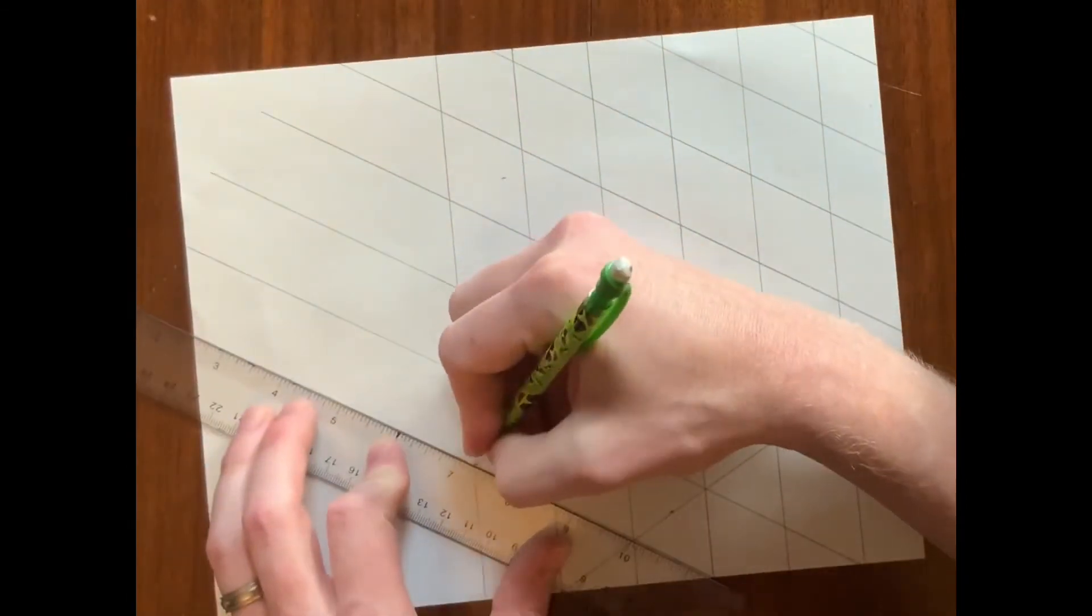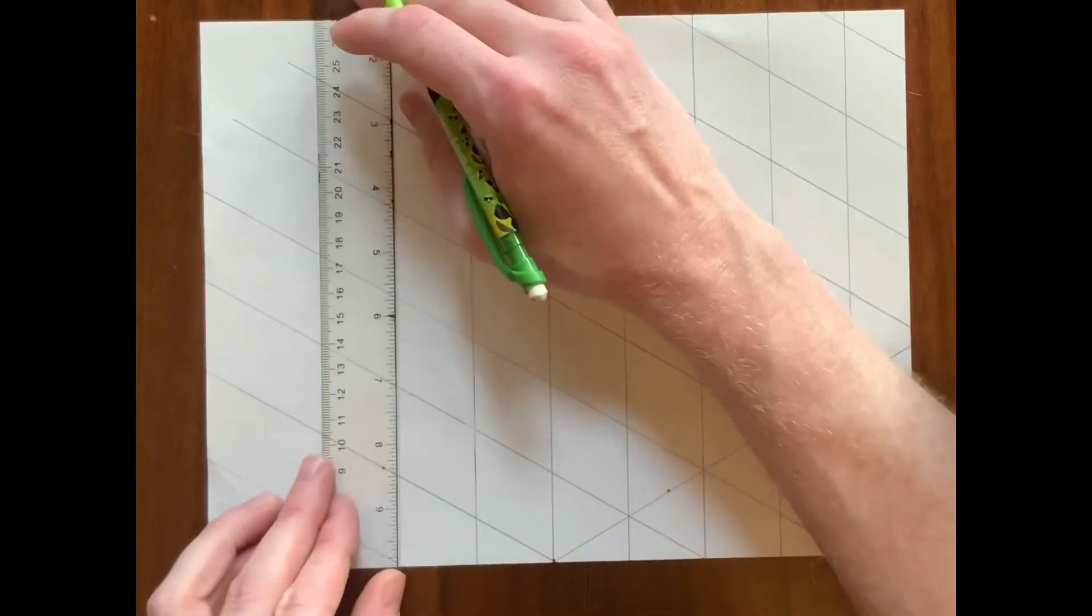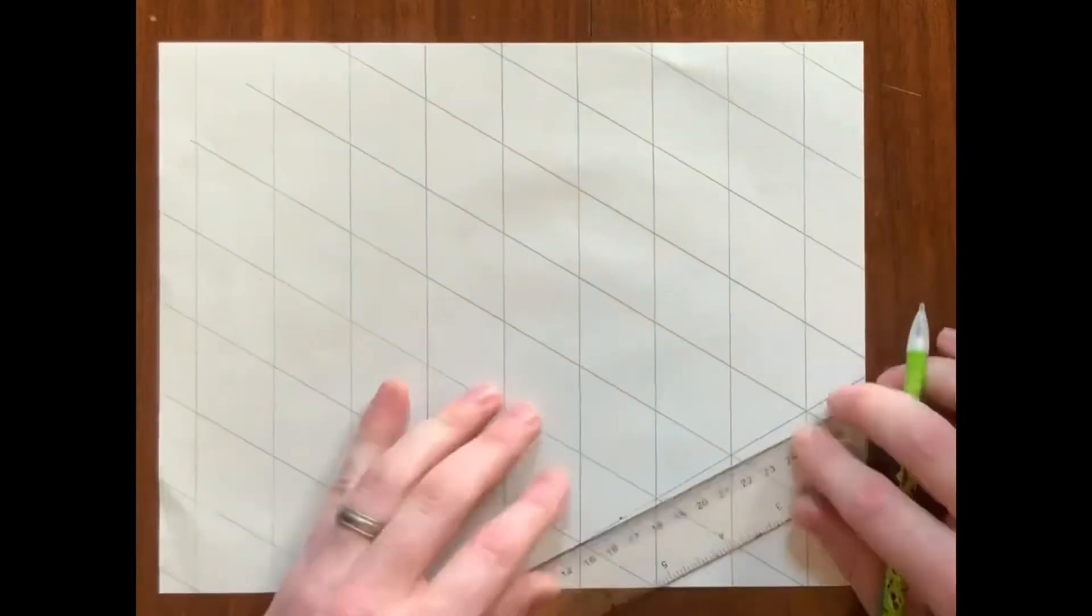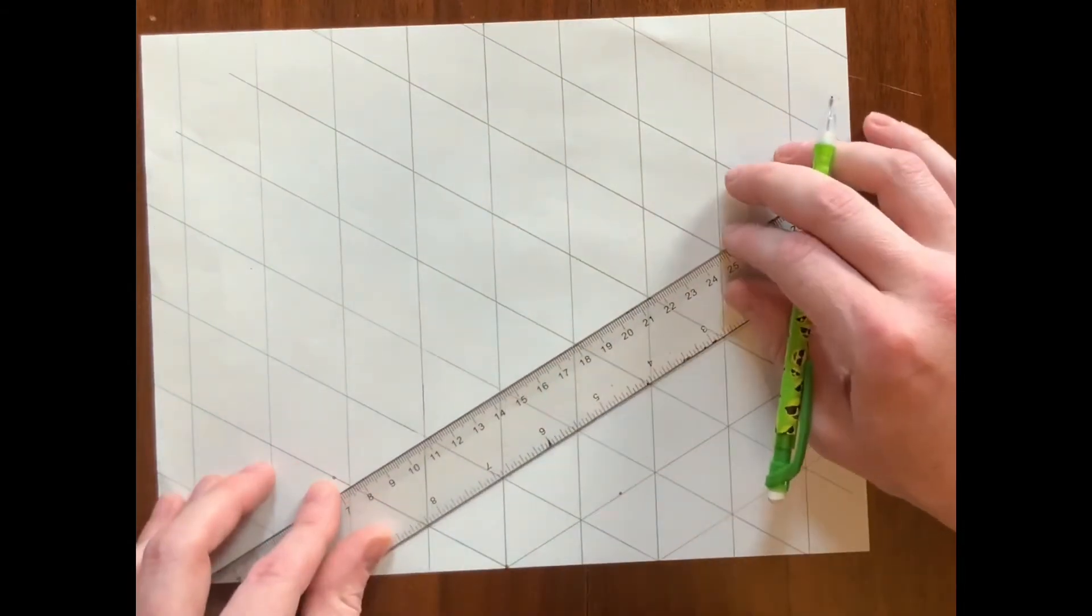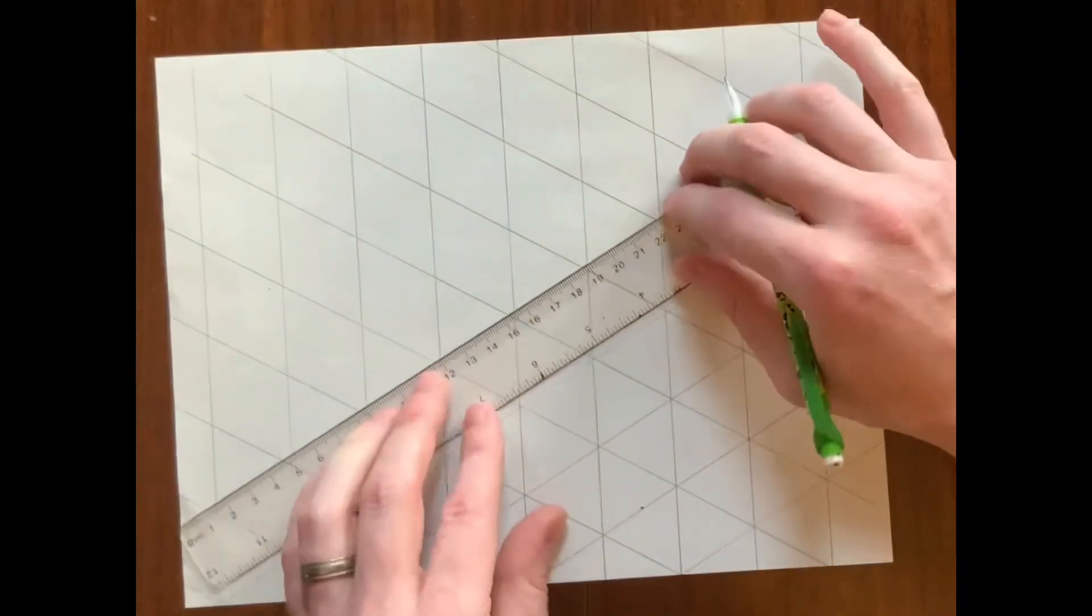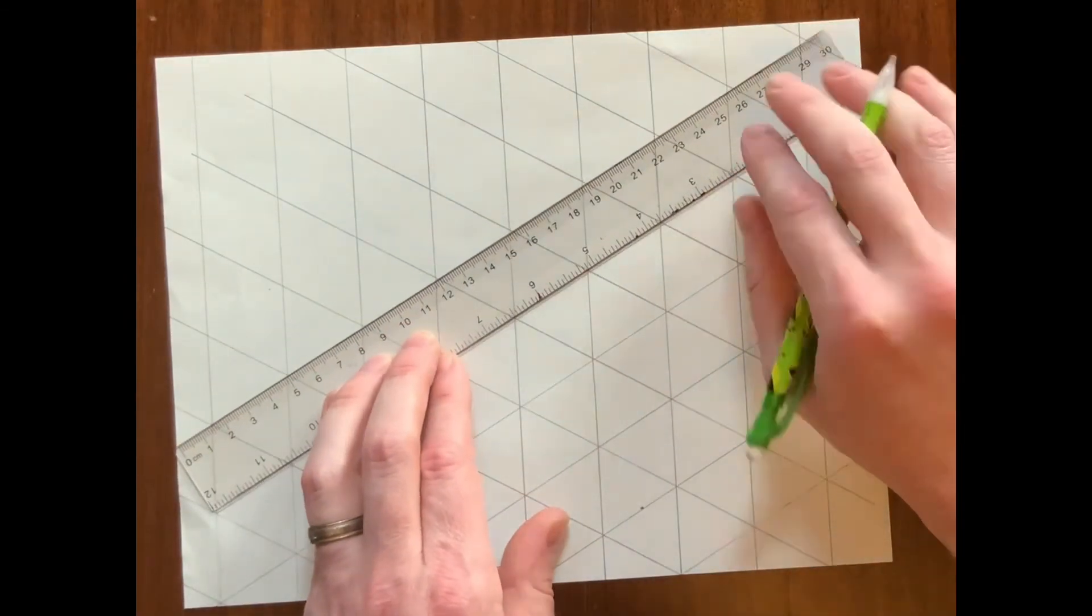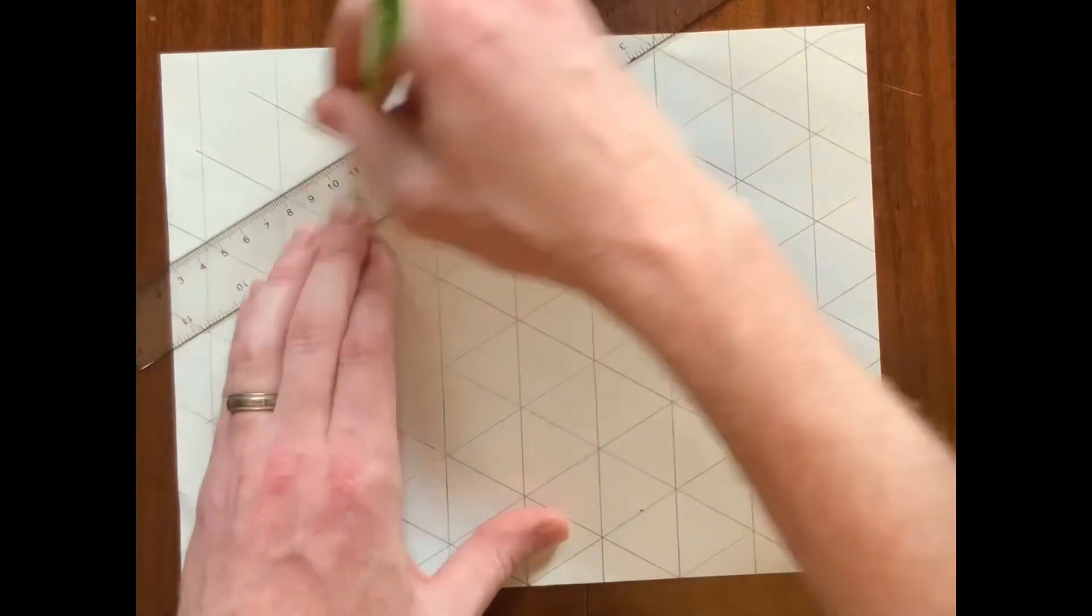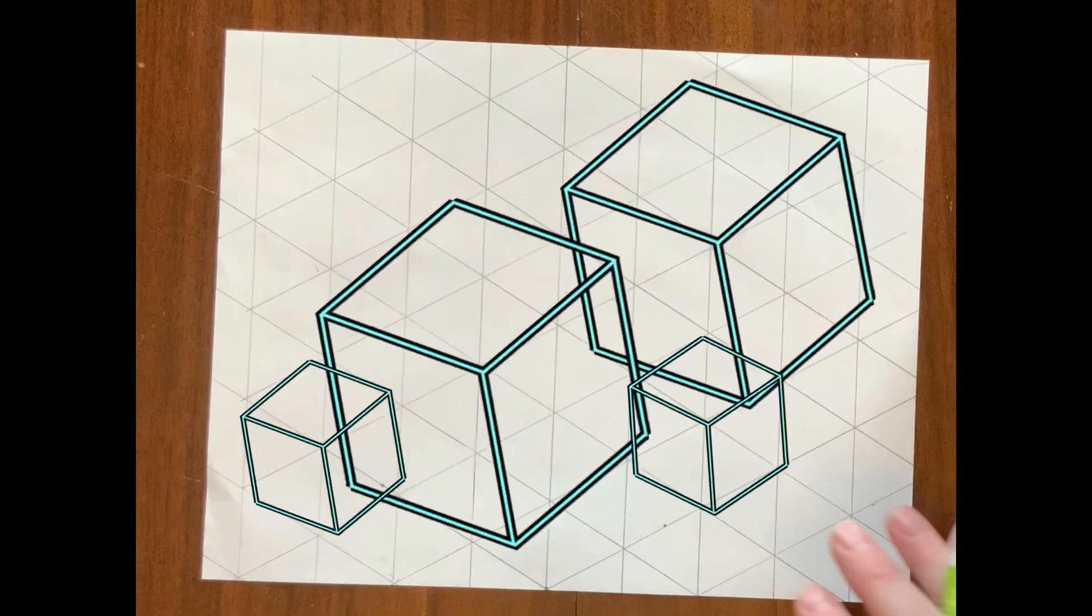Check the ruler to measure the other line. It's isometric.